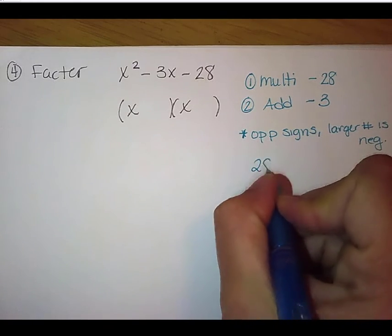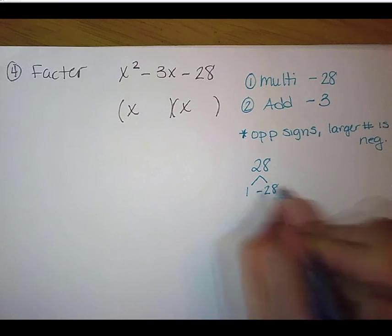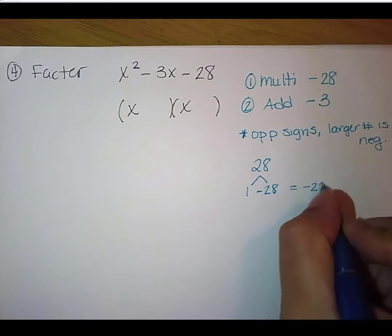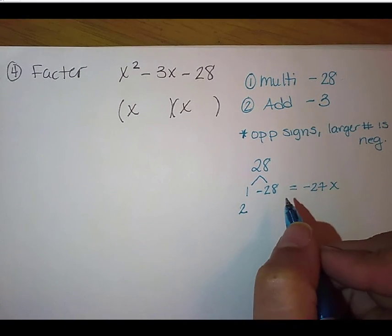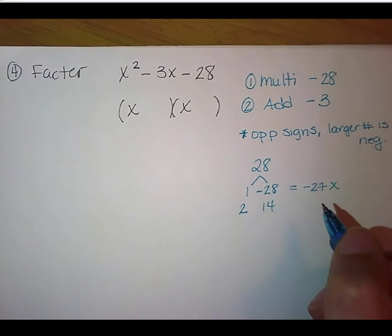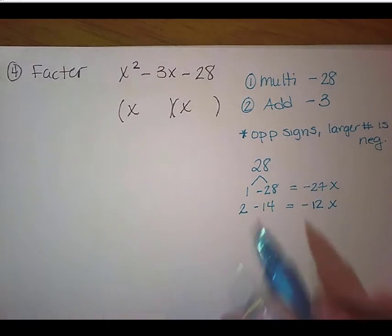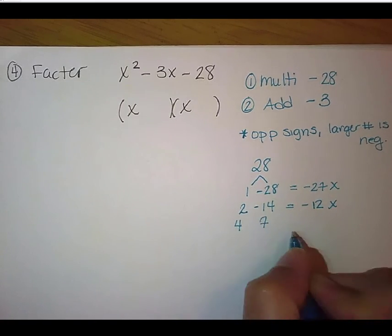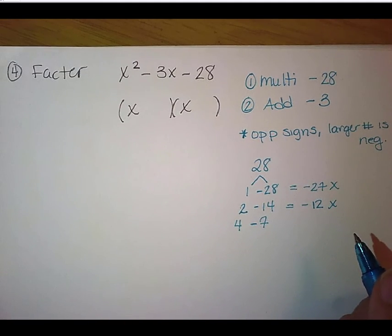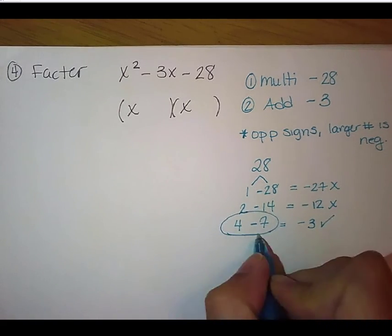So we're going to start with our 28. And we could do 1 and 28. Remember, my larger number is my negative. When I add those, that gives me a negative 27. That's not going to work. We can do 2, when it's 2 and 14. So 2 and 14, again, my larger number is my negative, but that's going to give me negative 12. That's a little better, a little smaller, but still not our negative 3 we want. The next number that divides into 28 would be 4, and it would be 4 and 7. Again, my larger number is my negative, so that would be a negative 7. And when I combine those, I would get negative 3. There's my pair I'm looking for. That's my set. So I'm going to do x plus 4, x minus 7.